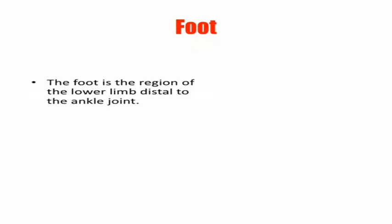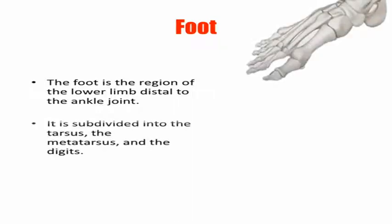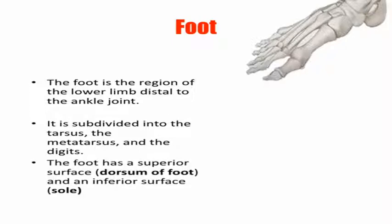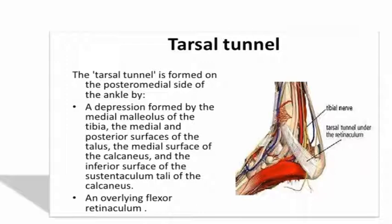The foot is the region of the lower limb distal to the ankle joint. It is subdivided into the tarsus, metatarsus, and digits. The foot has a superior surface called the dorsum and an inferior surface called the sole or plantar surface. The tarsal tunnel is formed on the posteromedial side of the ankle by the medial malleolus of the tibia, the medial and posterior surface of the talus, and the medial surface of the calcaneus, along with the inferior surface of the sustentaculum tali of the calcaneus.